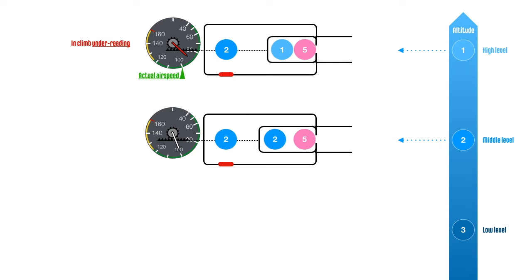Thus the airspeed displayed is less than actual airspeed. So the instrument incorrectly under-reads in a climb.